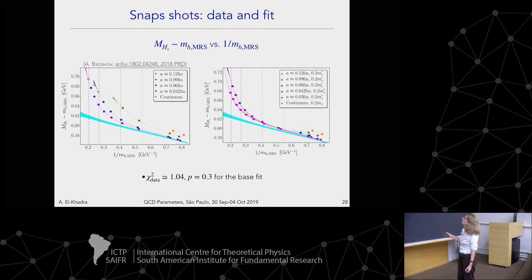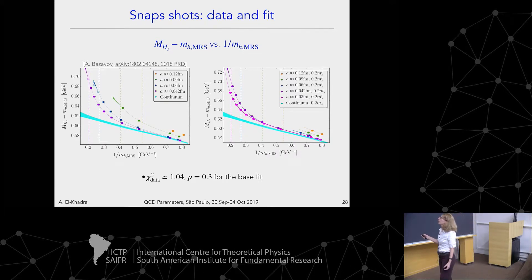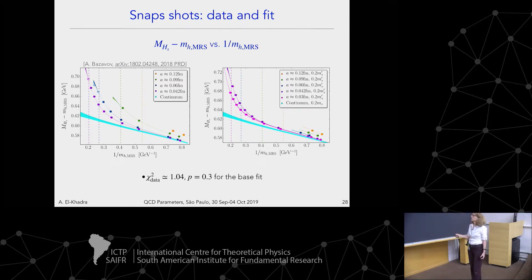Showing data where the light sea quarks are at 0.2 times the strange mass allows us to include the finest 0.03 fm ensemble, where all heavy quark masses are below 0.9 in lattice units. You can see that the fit describes the data really well, and we get the continuum dependence of the heavy meson mass on M_H^MRS with very nice accuracy as shown in the band.